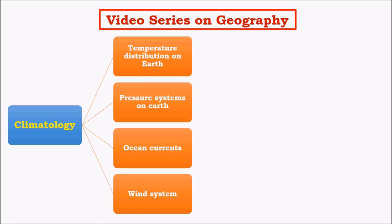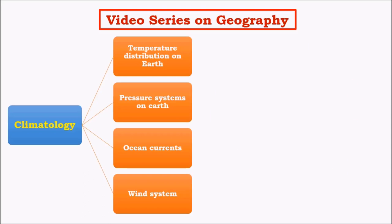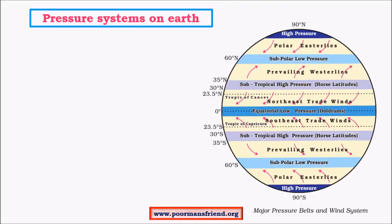Pressure systems, ocean currents, and wind systems have a great influence on temperature distribution on earth, and all these factors are interconnected. Hence these factors greatly influence the climatic conditions at various parts of the earth, so it is important for us to understand these major phenomena which influence temperature distribution on earth. In pressure systems we study about permanent winds as well because these two things are interconnected, so we'll be studying them together.